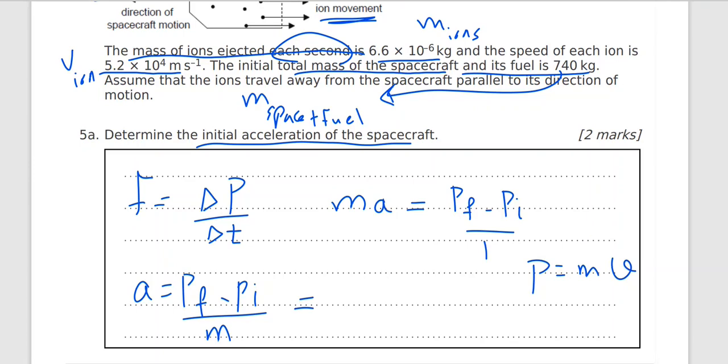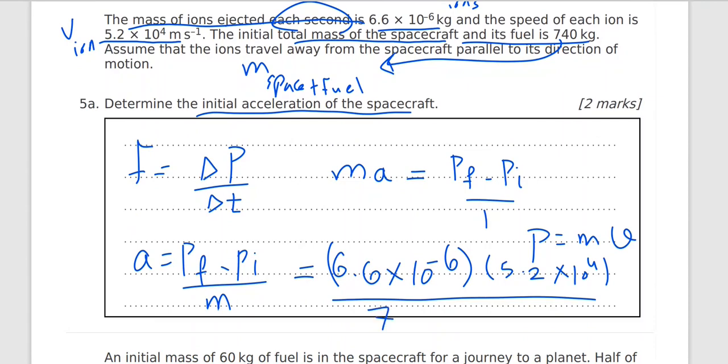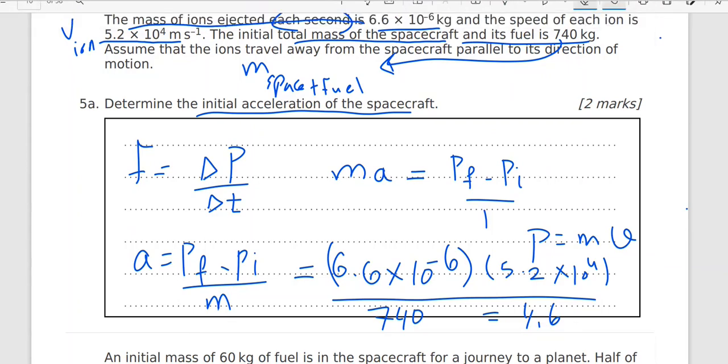P final will be mass times velocity. Remember momentum is mass times velocity. So M for the ions is 6.6 times 10 to the power negative 6. This is the fuel ejected with the ions. Times velocity is 5.2 times 10 to the power 4. Divided by the total mass for the spacecraft and the fuel is 740. This will be 4.6 times 10 to the power negative 4 meter per second squared.